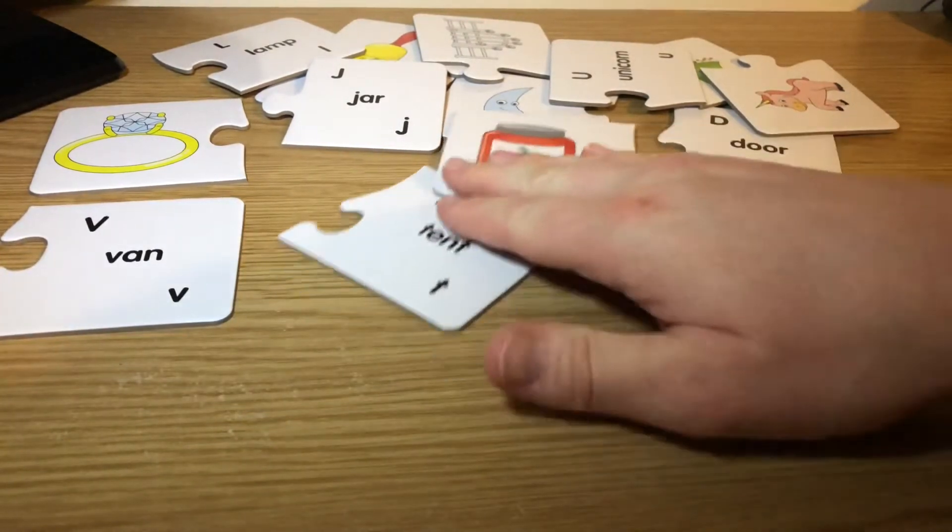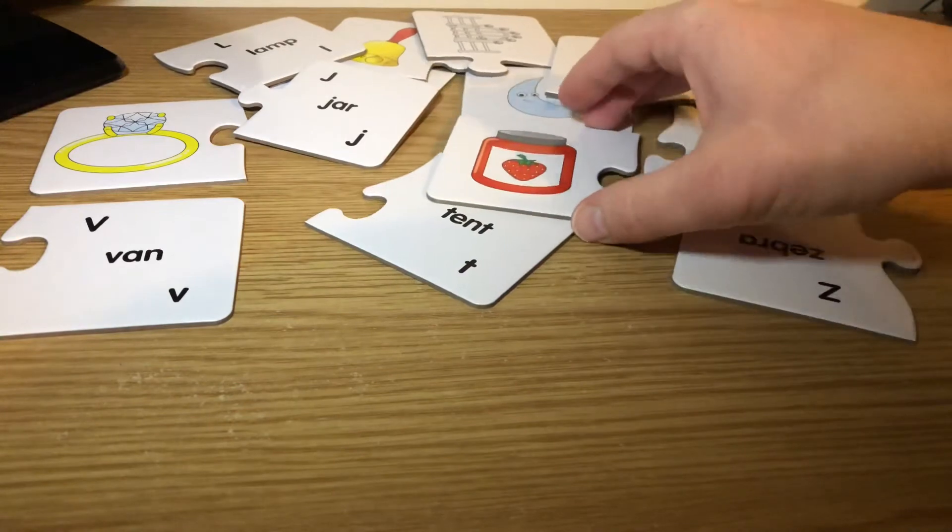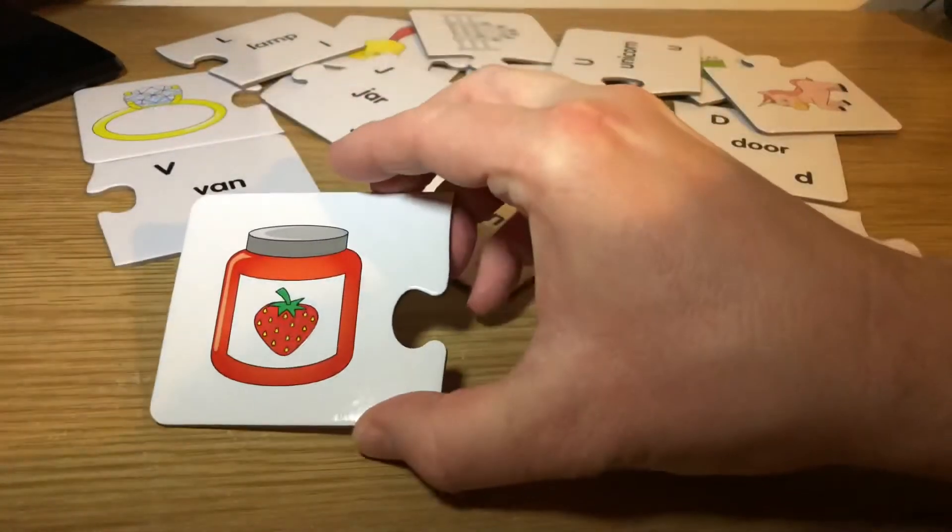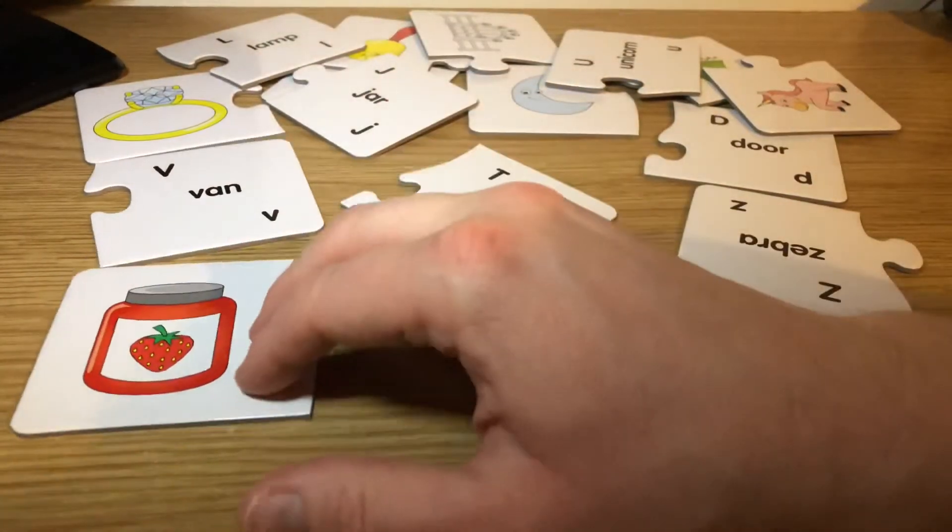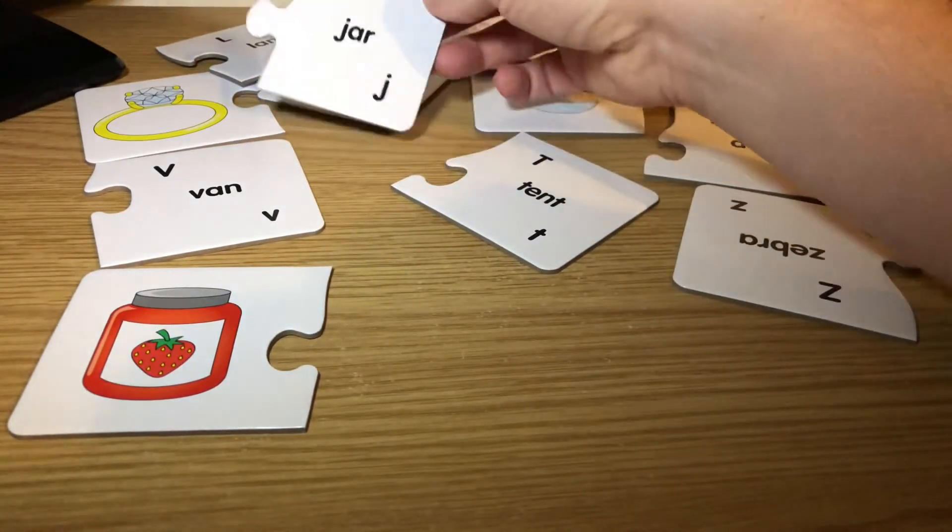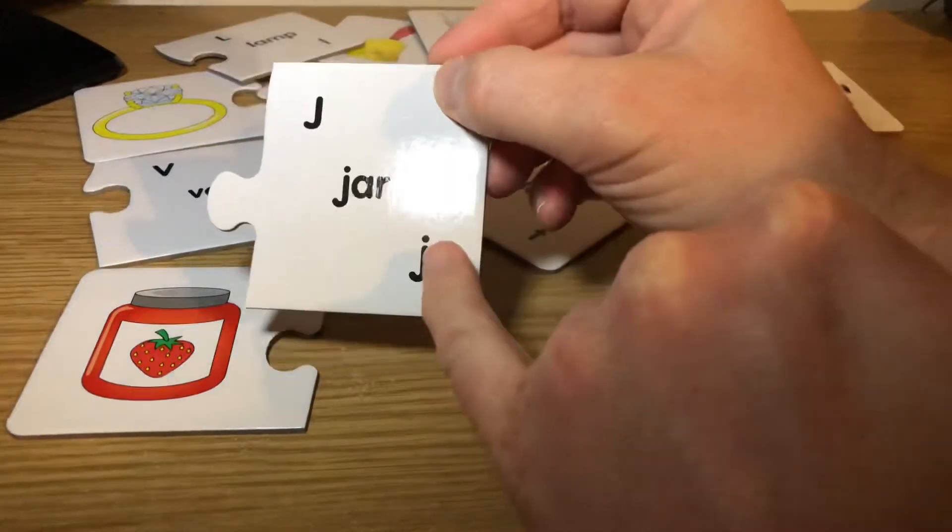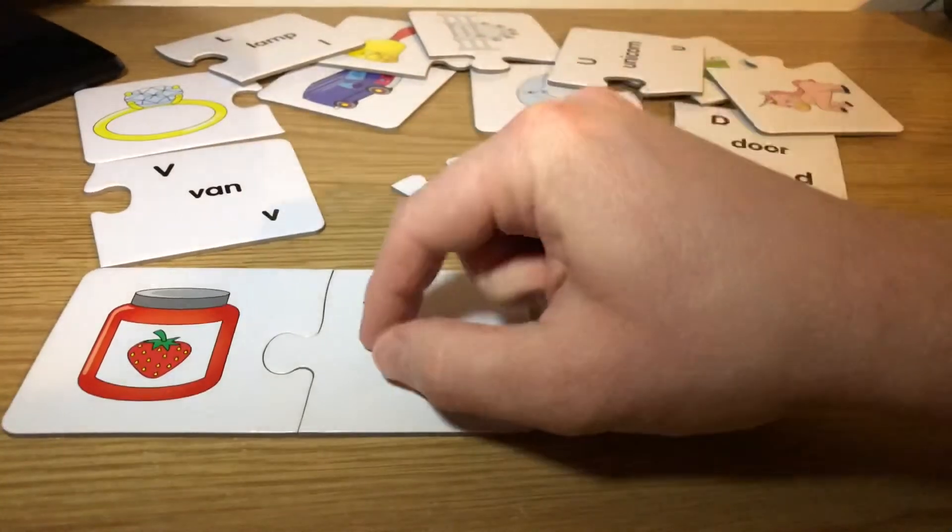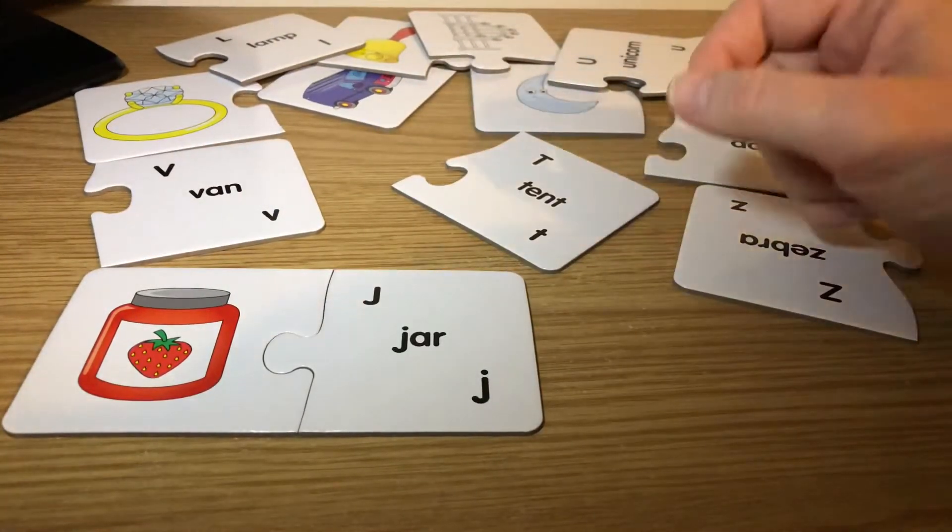Shall we just do a couple together? Right, this is a jar of jam. What does that begin with? Yeah we've been doing that one haven't we? Ja, now that I've found the ja here, that says jar. Let's just do one more.